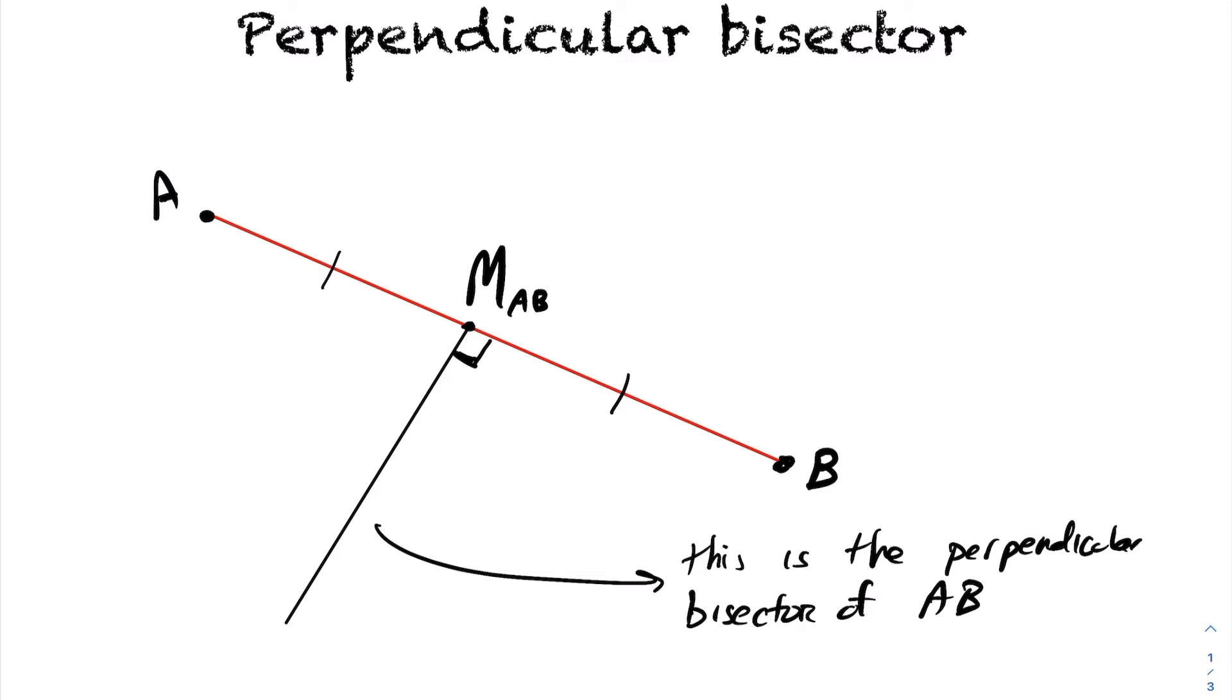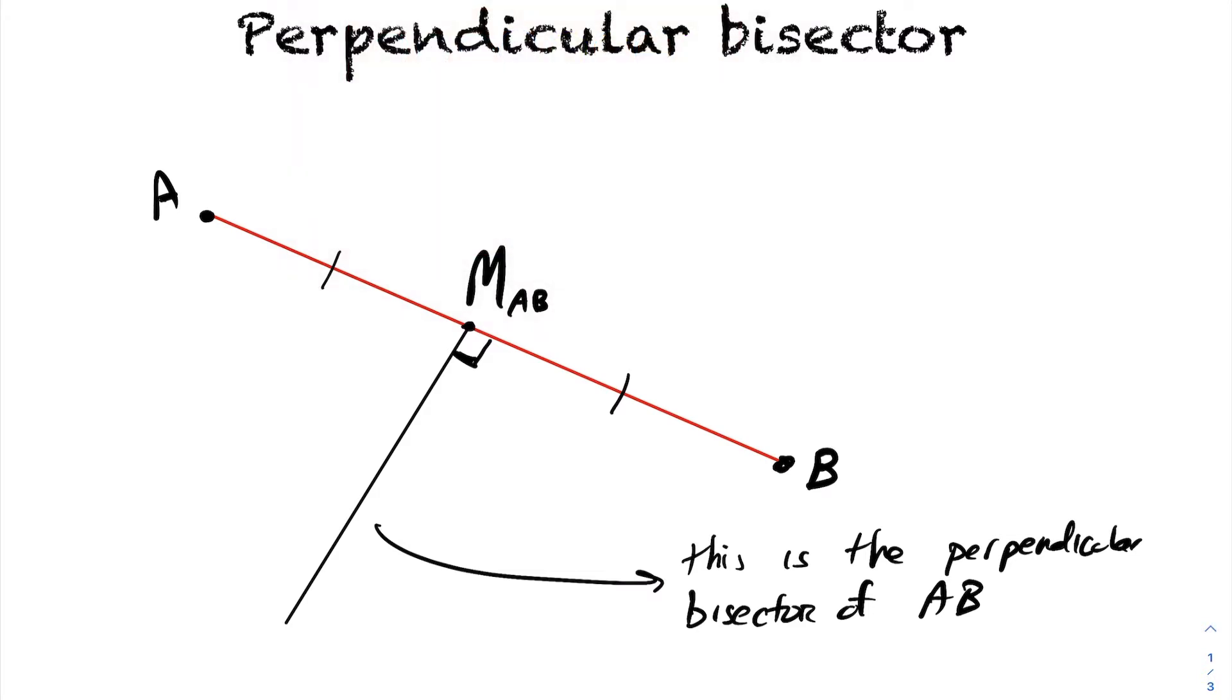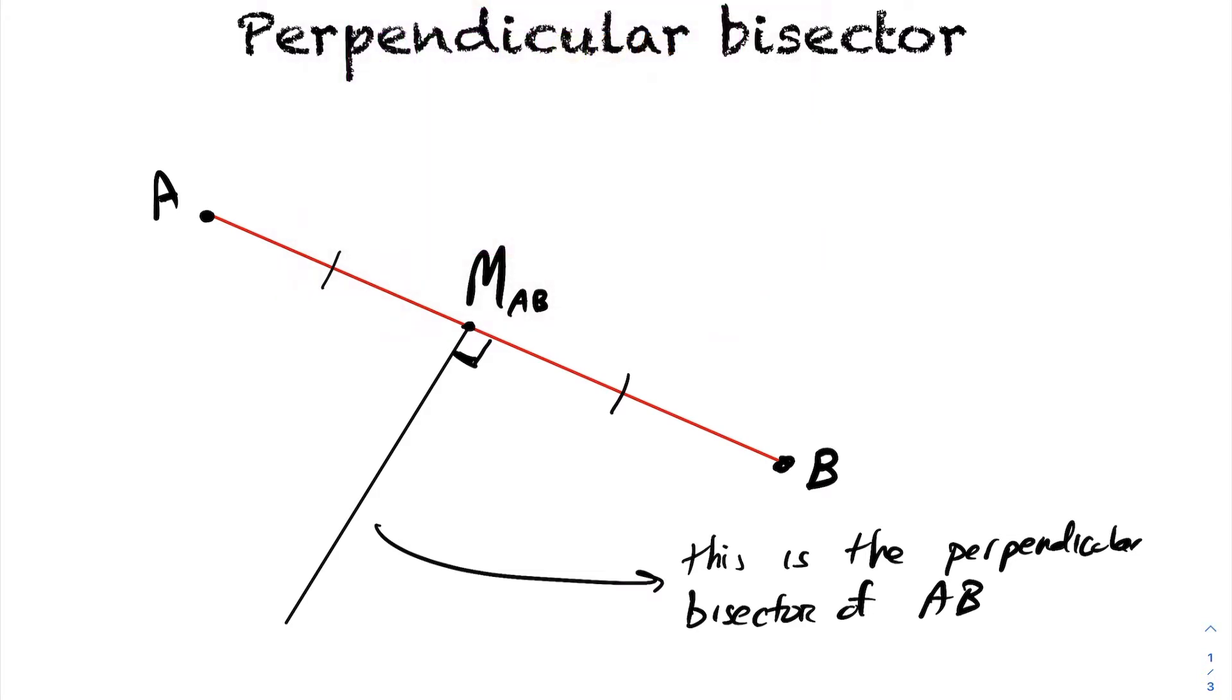Because obviously there's an infinite number of lines I could draw here that cross at 90 degrees. All these lines I'm drawing here, these are all parallel to the line I have in black here. These all meet at 90 degrees. You can do an infinite number of them that do that. But there's only one perpendicular bisector that's going to cross at the midpoint.